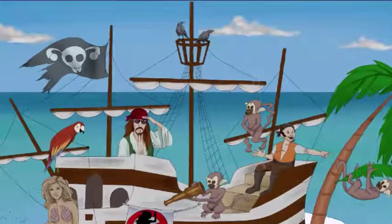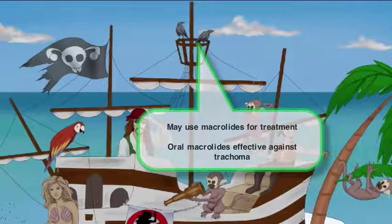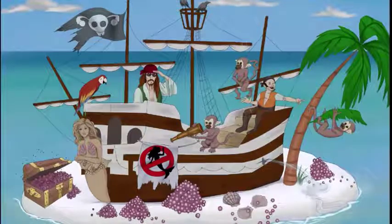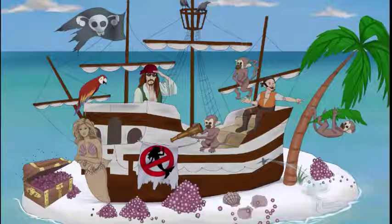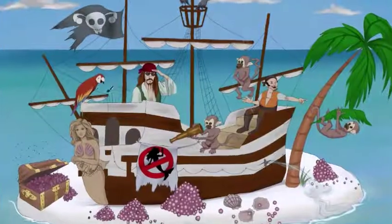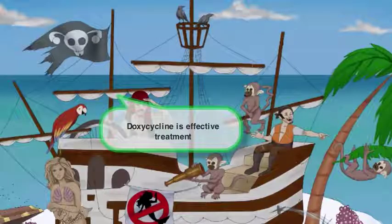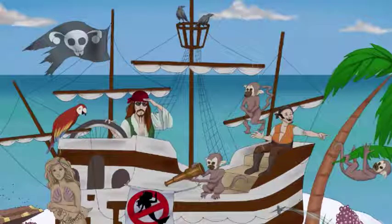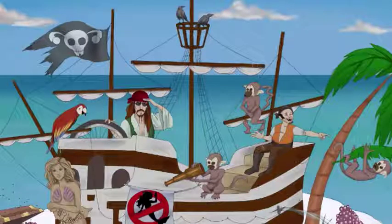In our drawings, we'll add crows at the top of the ship — these crows are a recurring symbol for macrolides. Another treatment option for Chlamydia is tetracyclines, such as doxycycline. Doxycycline is demonstrated by our bicycle wheel, which we'll include here as the captain's steering wheel. The atypical pneumonia from Chlamydophila pneumoniae can also be treated with tetracyclines as first line, or macrolides as a second line.